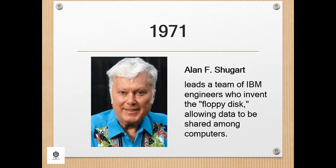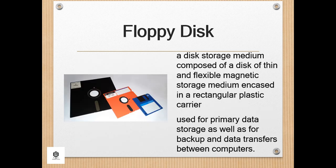In 1971, Alan F. Shugart led a team of IBM engineers who invented the floppy disk, allowing data to be shared among computers. A floppy disk is a disk storage medium composed of a disk of thin and flexible magnetic storage medium encased in a rectangular plastic carrier, read and written using a floppy disk drive, or FDD. Floppy disks were an almost universal data format from the late 1970s into the 1990s, used for primary data storage as well as for backup and data transfers between computers.